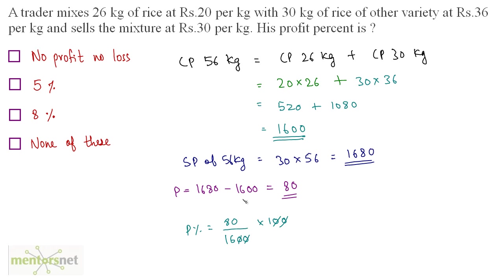The two zeros cancel out, leaving 80 by 16. Since 8 times 10 is 80 and 8 times 2 is 16, we get 10 by 2, which equals 5. So the profit is 5%. Option B is the correct answer.